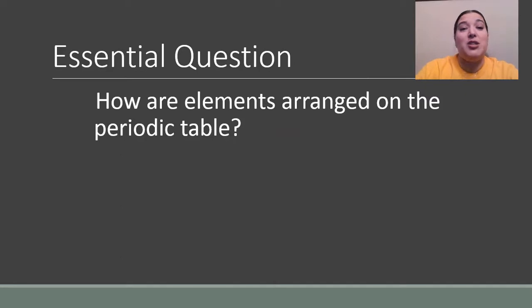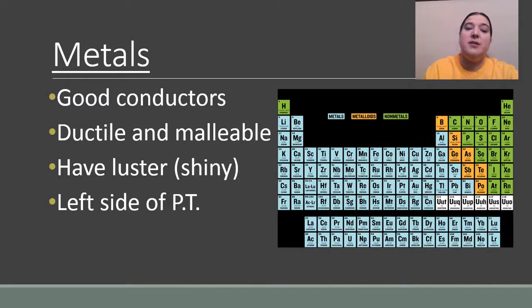So the major question that we're going to answer today is how are the elements arranged on the periodic table? We talked a little bit about it last class when we talked about which ones go up and down and which ones go across. But before we get into 8th grade, let's jump back into 6th grade. In 6th grade, you talked about metals, nonmetals, and metalloids.